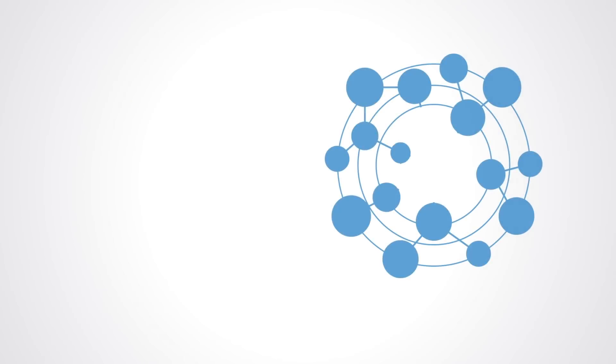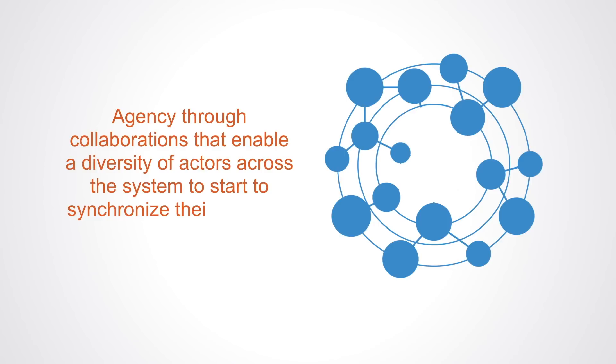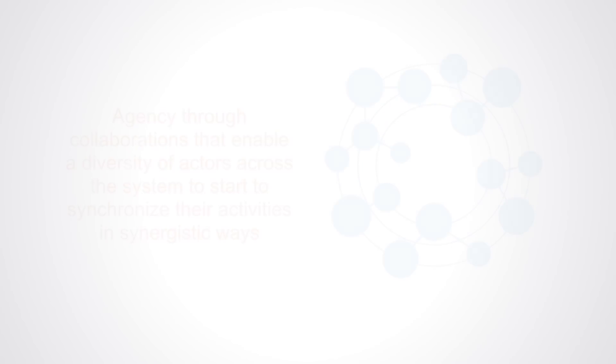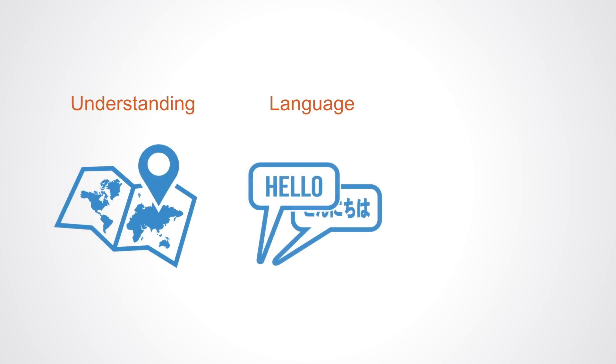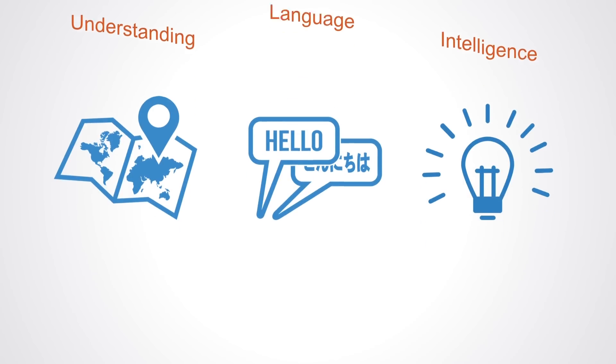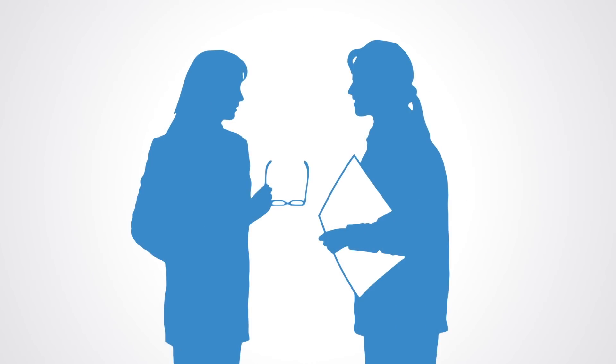Beyond awareness, these platforms need to have agency through collaborations that enable a diversity of actors across the system to start to synchronize their activities in synergistic ways. Platforms for system change work to build systems awareness through bringing people together, creating structures that enable them to work together, make collaboration an attractor, and demonstrate value to the stakeholders. Likewise, they have to build adaptive learning feedback loops for the network to explore and learn about the problem and possible solutions. Collaborative change requires building shared understanding, shared language, and ultimately some form of collective intelligence. This starts with recognizing the other actors and the need to work together, then coordinating, collaborating, synthesizing.